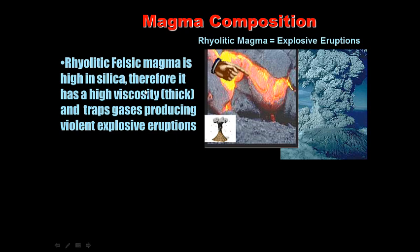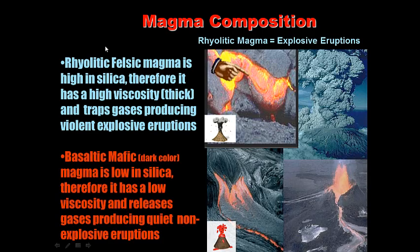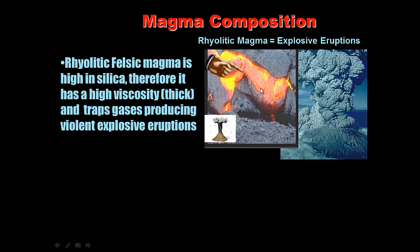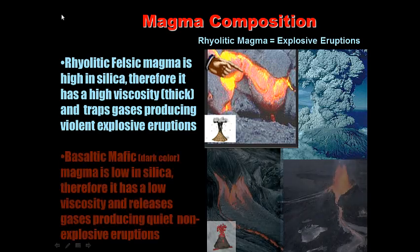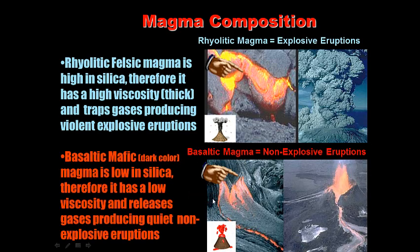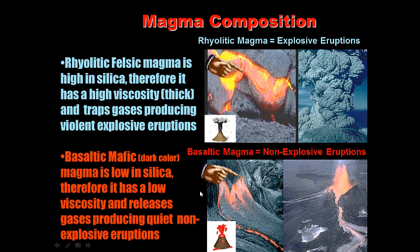Rhyolitic magma is high in silica with high viscosity — it is thick like toothpaste and does not flow fast. This traps gases inside the magma; pressure builds up and produces explosive eruptions like Mount St. Helens. Basaltic magma is dark in color, low in silica, and flows almost like water. Because it flows, gases are released, producing non-explosive quiet eruptions — which is why no one has died in Hawaii, which has been erupting since 1950.